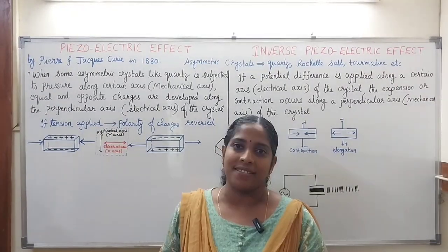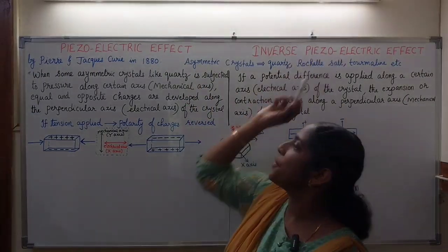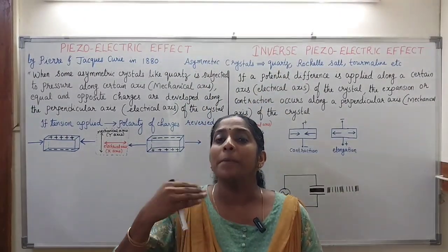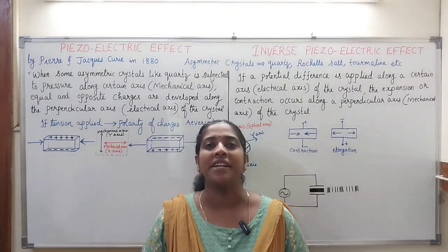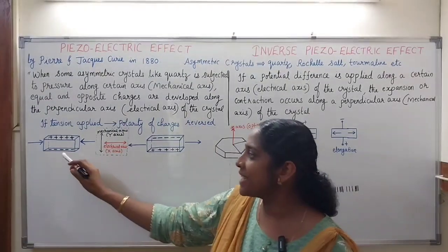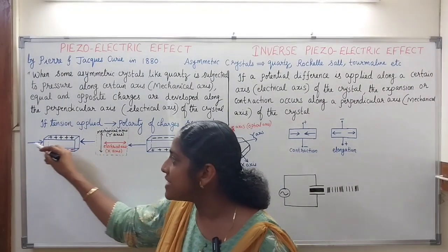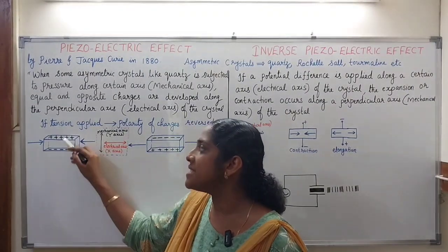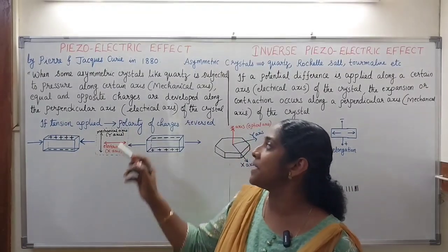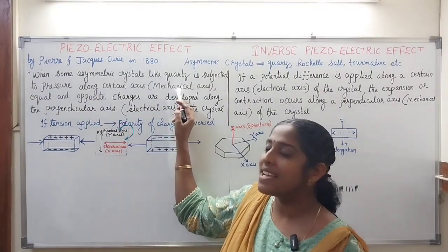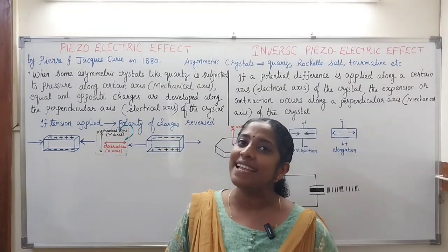What is meant by piezoelectric effect? In some asymmetric natural crystals like quartz, Rochelle salt, tourmaline, etc., if we apply pressure along a certain direction, then electric charges are developed perpendicular to it. The axis along which we apply the pressure is known as the mechanical axis, and the charges are developed perpendicular to that axis — that axis is known as the electrical axis.